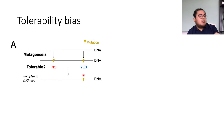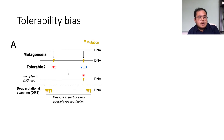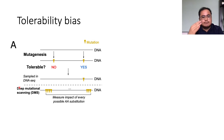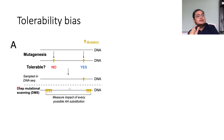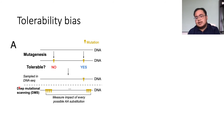We then considered whether there are other data types we could use to overcome this bias. One option is deep mutational scanning experiments, which tend to measure the impact of every possible amino acid substitution along the protein sequence. By explicitly sampling these supposedly intolerable mutations, this should in theory alleviate the bias.